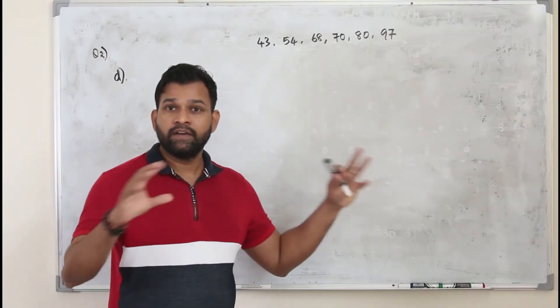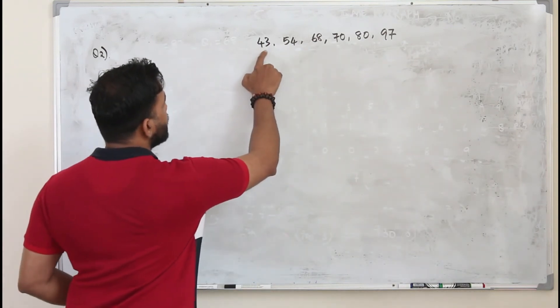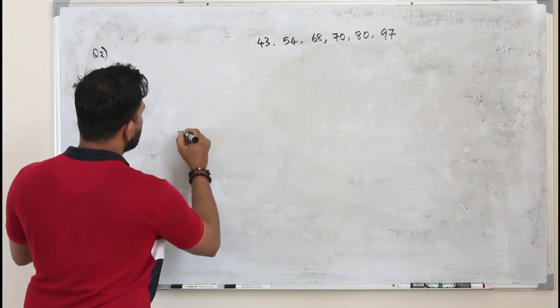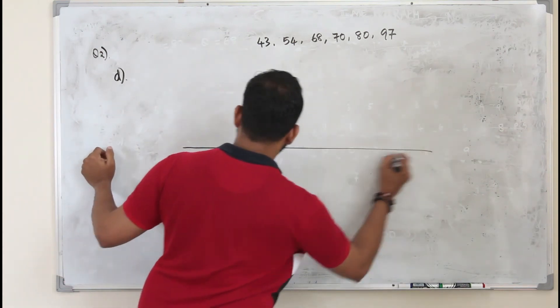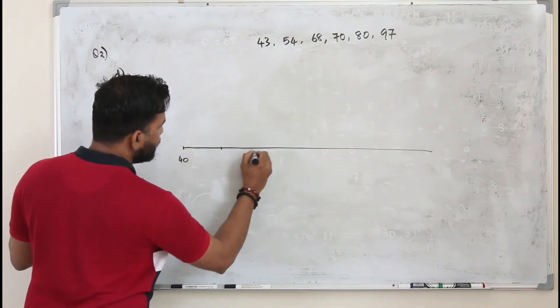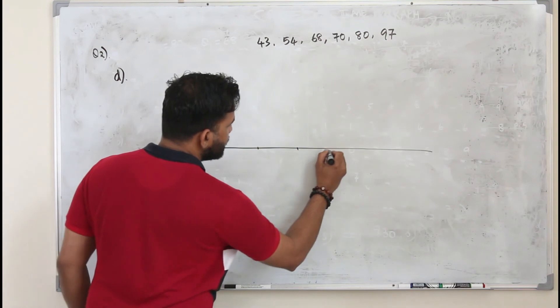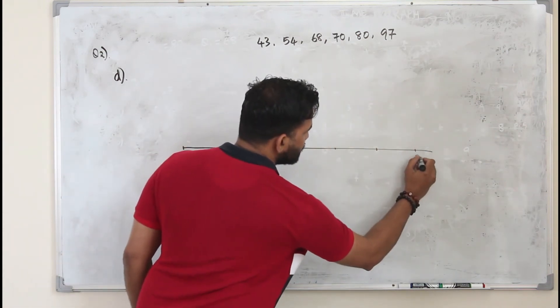So now we are going to draw the box and whisker plots. The lowest value here is 43. So I'm going to start from 40. Let's draw a number line first. Starting from 40, 50, 60, 70, 80, 90. We have 97. So till 100.